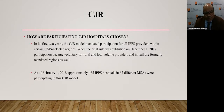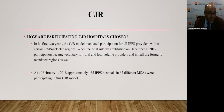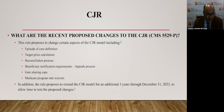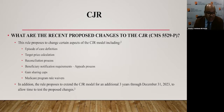How are participating CJR hospitals chosen? In the first two years, the CJR model mandated participation for all IPPS providers within certain CMS-selected regions. When the final rule was published on December 1, 2017, participation became voluntary for rural and low-volume providers in half the formerly mandated regions. As of February 1, 2018, approximately 465 IPPS hospitals in 67 different MSAs were participating. The recent proposed changes to the CJR include changes to the episode of care definition, target price calculation, the reconciliation process, beneficiary notification requirements and the APLs process, gain sharing caps, and Medicare program rule waivers. The rule also proposes to extend the CJR model for an additional three years through December 31, 2023, to allow time to test the proposed changes.